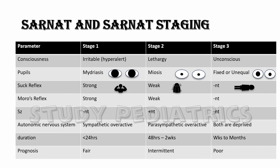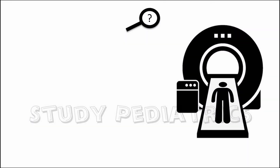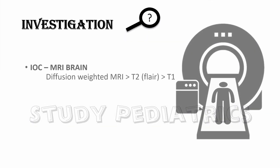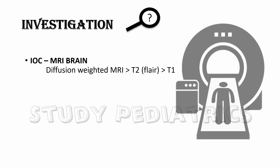Coming to the investigation: the investigation of choice for HIE is MRI. The diffusion-weighted MRI is the best. Then comes the T2 FLAIR technique, and then the T1 MRI.